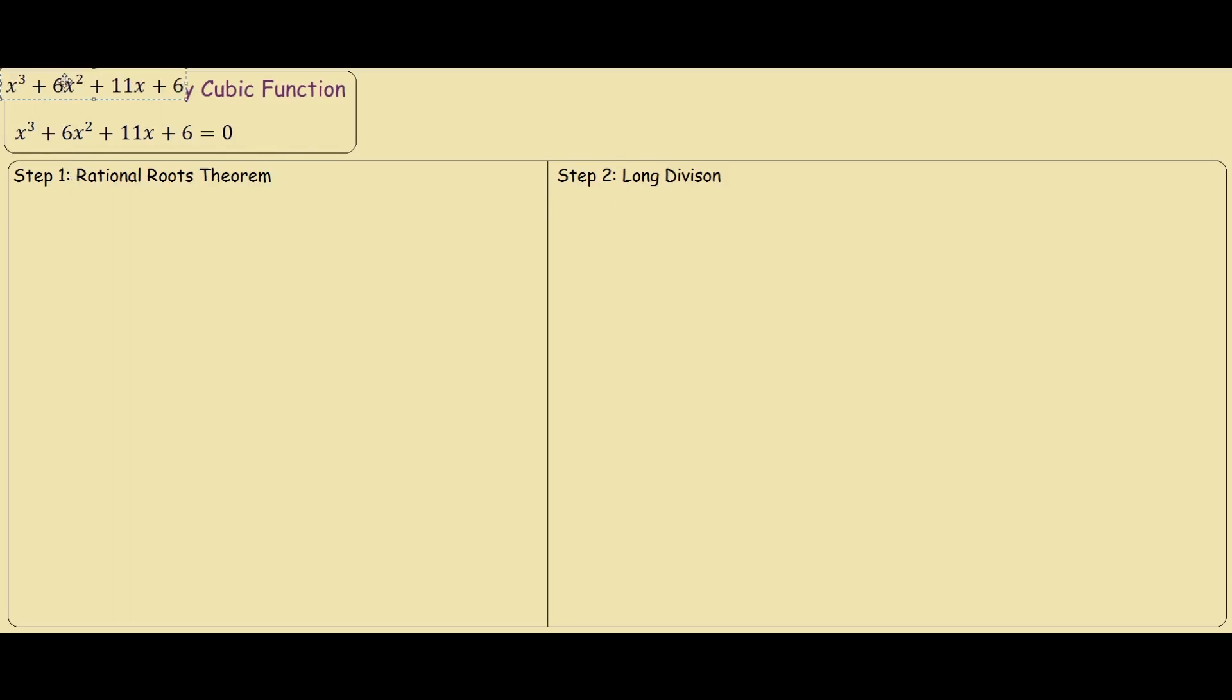So if I put our cubic function over here, if you don't know what rational roots theorem is, all we do is focus on the coefficient in front of the x cubed, so in this case it's 1, and we call this an.